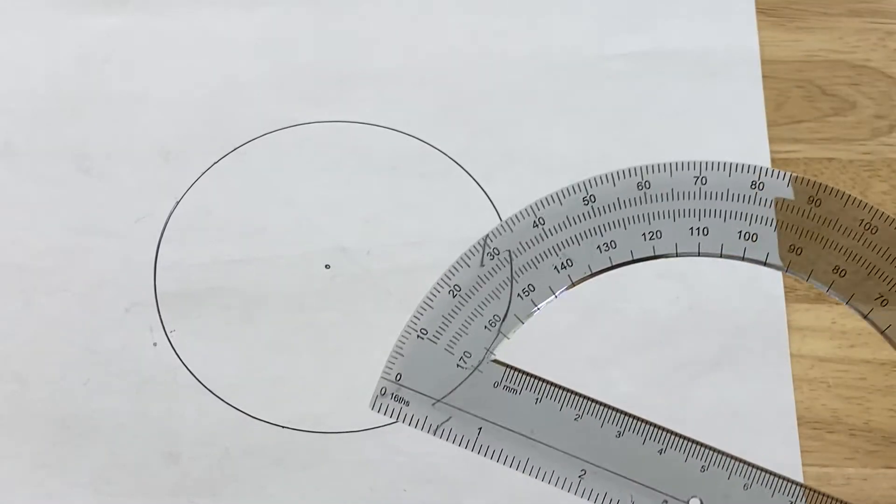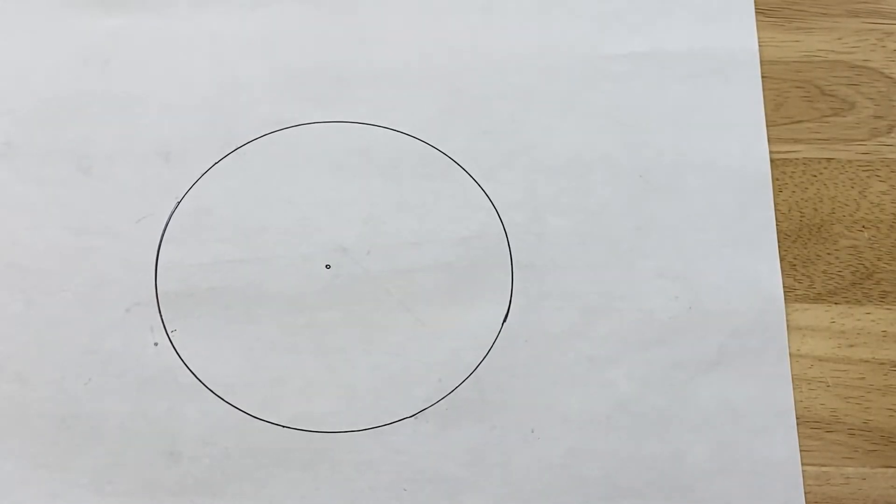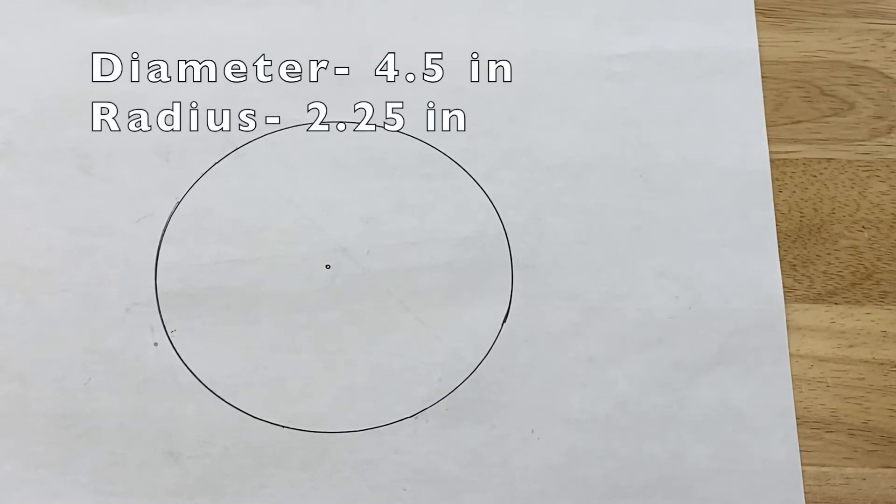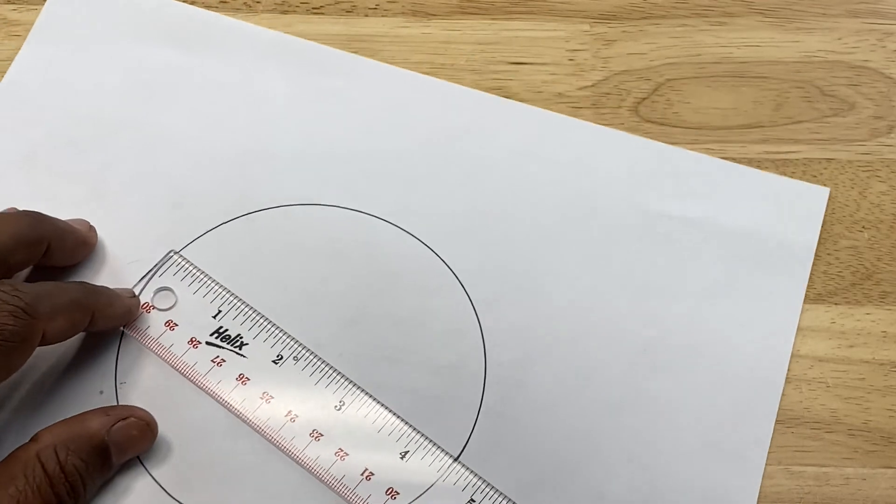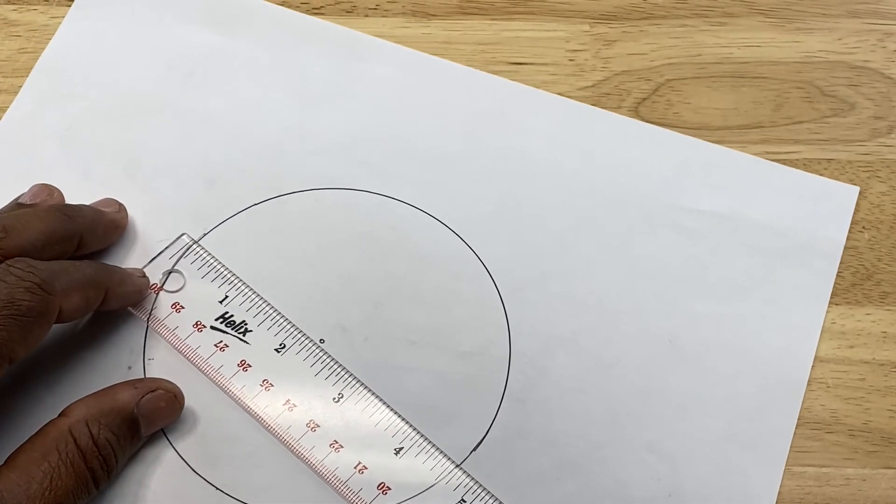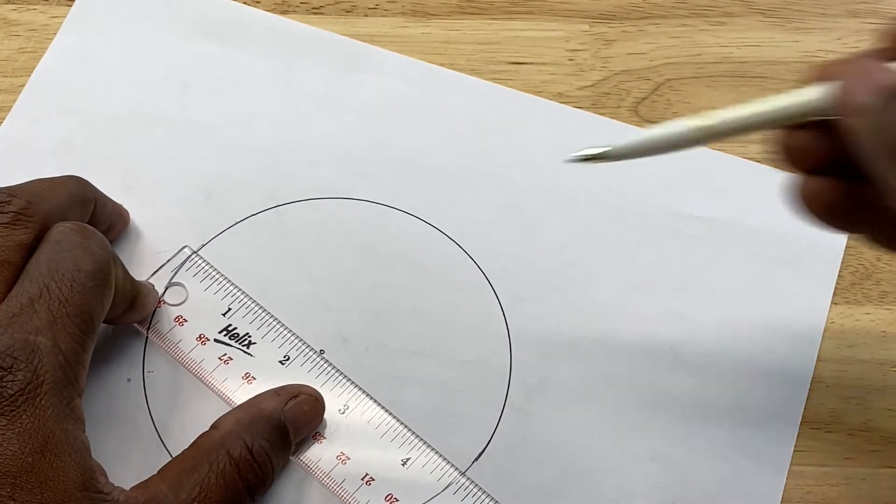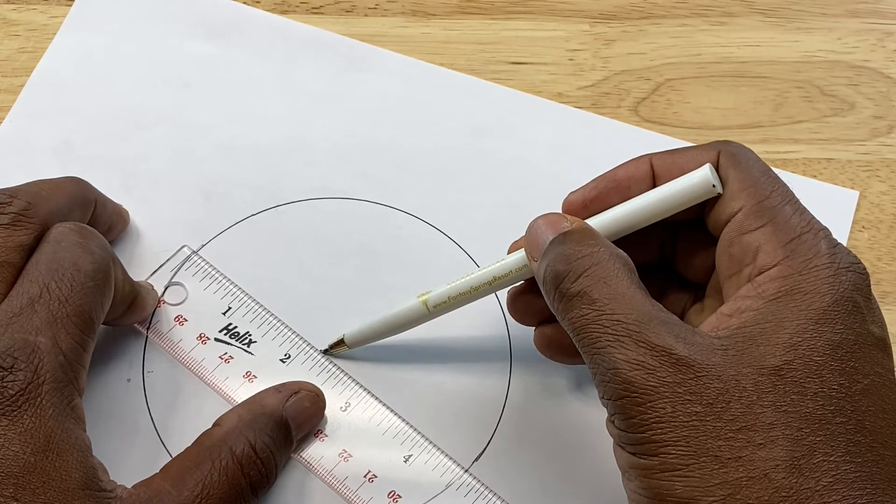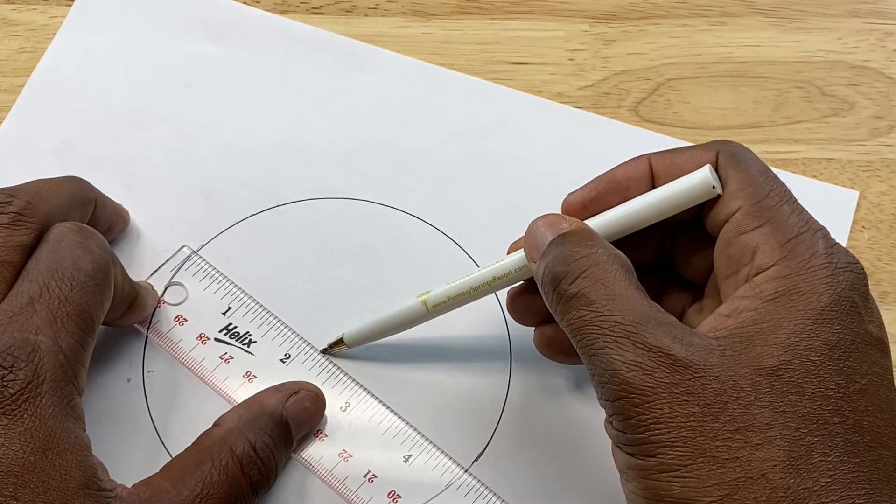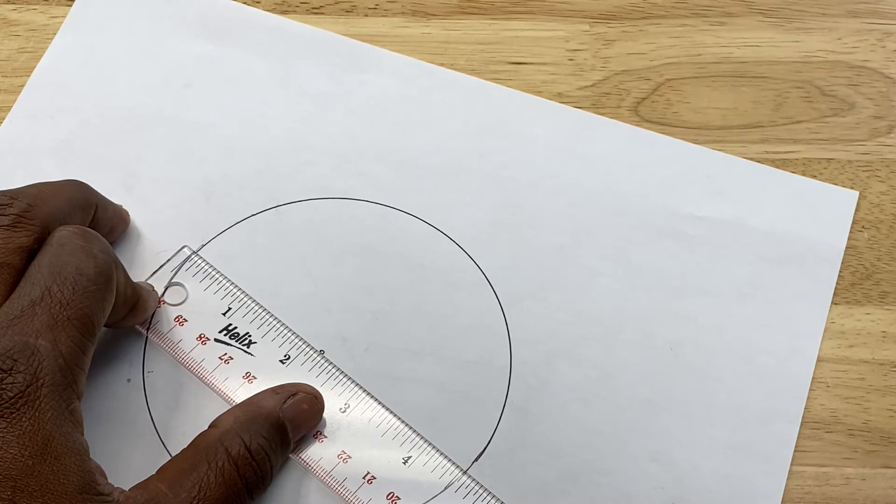So you may be saying, what if I don't have a protractor to find the center of my circle? Well, you don't necessarily have to have a protractor. You can use a straight edge to find the center of your circle as well. So we know that the diameter is 4.5 inches across. Well, if you divide that by two, you get two and a quarter inches. So you take your straight edge, and you measure from the edge two and a quarter inches in, and as we see, that lands right on the center mark that we made with the protractor. So that's how you can confirm if your center is correct.